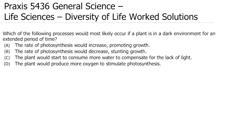Let's start with our first question. It reads: which of the following processes would most likely occur if a plant is in a dark environment for an extended period of time? When we're thinking about this problem, we need to think about photosynthesis, because a plant in the dark is not going to be in ideal conditions. In order for a plant to survive, it needs to undergo photosynthesis to make the food it needs. And in the dark, it's missing one of the key components of photosynthesis, which is light.